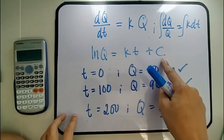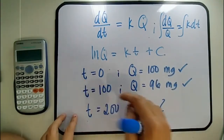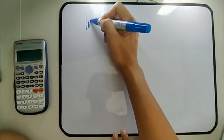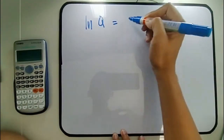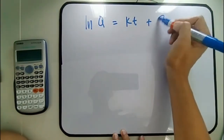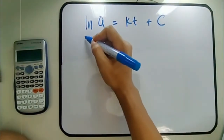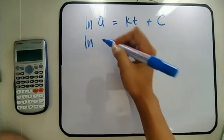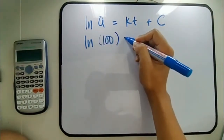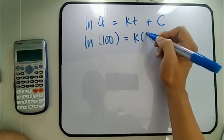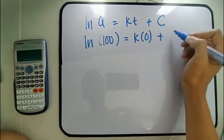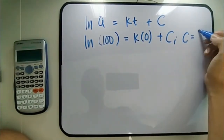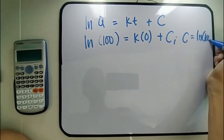Let's find C using our first boundary condition. From ln Q = KT + C, substituting the first boundary condition: ln(100) = K(0) + C. Therefore, C = ln(100).